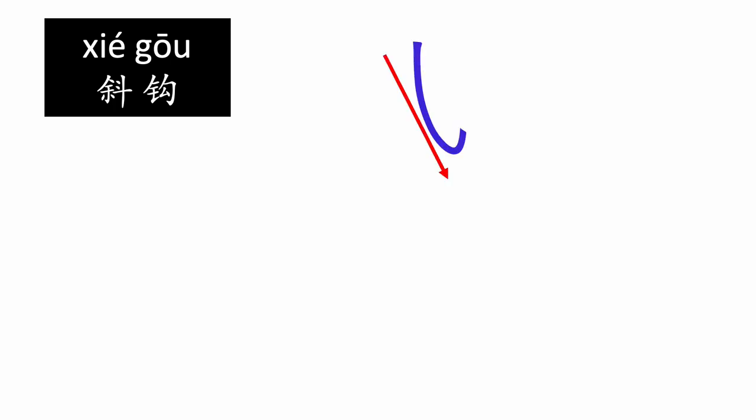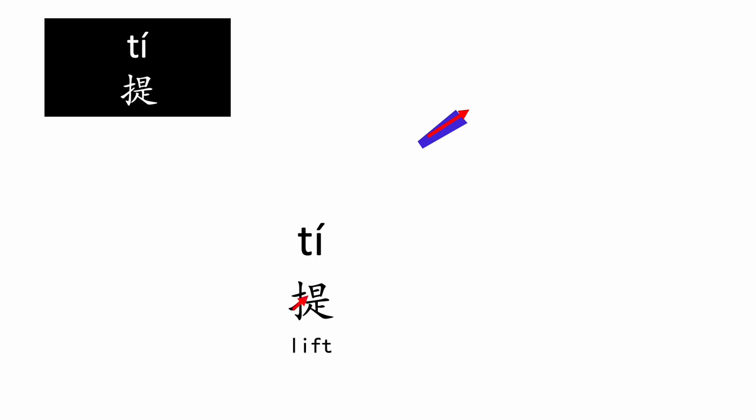The second stroke we learn today is 斜钩, which you can find in the character 我, meaning I or me. And you can see another new stroke in 我, that is 提 — a bit like the dot 点, but the writing order is reversed. The stroke 提 is in the character 提, which means lift.